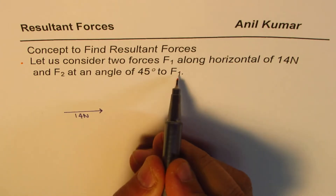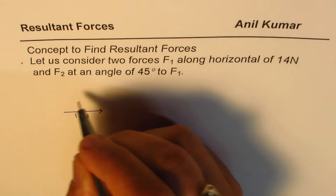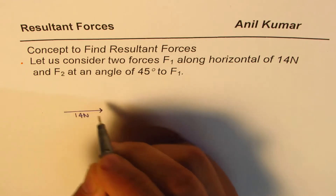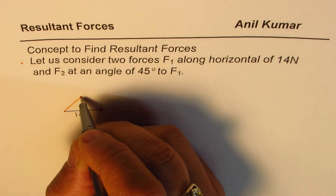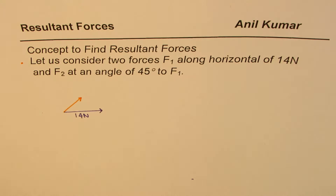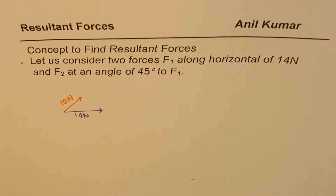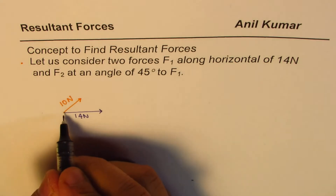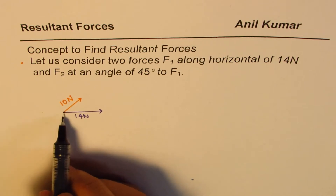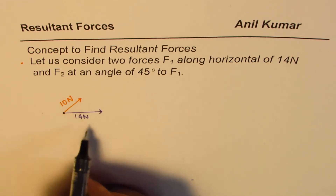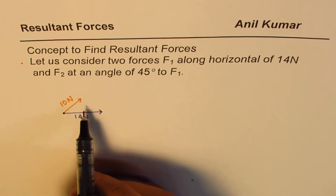We have another force acting at 45 degrees to F1, which we are calling F2. Let me draw this line at 45 degrees — that is 10 Newtons. So these are the two forces acting on a body in free space with no friction forces and no other forces.